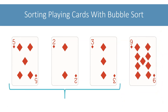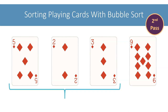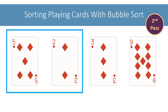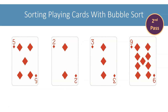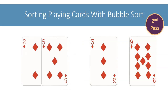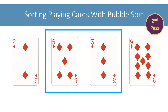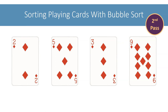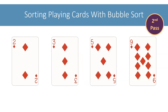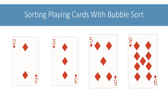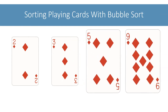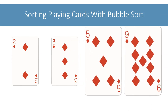Now we need to sort the remaining 3 cards. We will start our second pass through these cards. We will compare 5 and 2, and swap them as 5 is greater than 2. Next, we will compare 5 and 3. The cards are in wrong order, so let's swap them. With this, our second pass completes and the last two cards are placed in their correct positions.